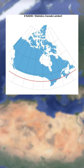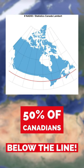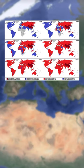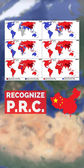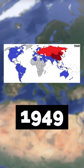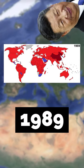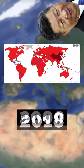This is a map of Canada and 50% of all Canadians live below this line here. This is a map depicting the countries that recognize the People's Republic of China versus those who recognize the Republic of China. As you can see, over time almost every country in the world has moved to recognize the PRC.